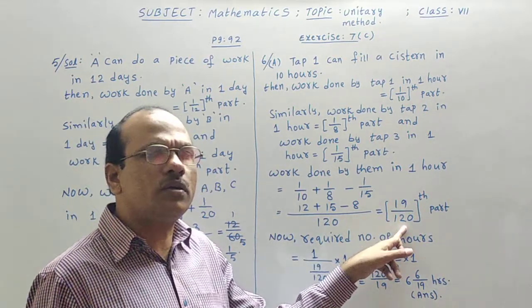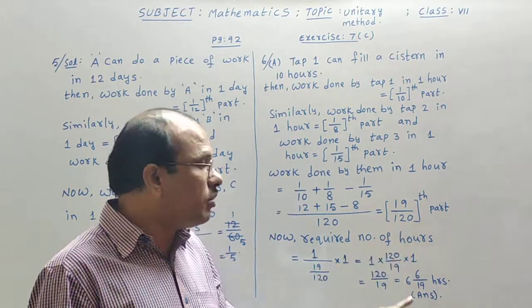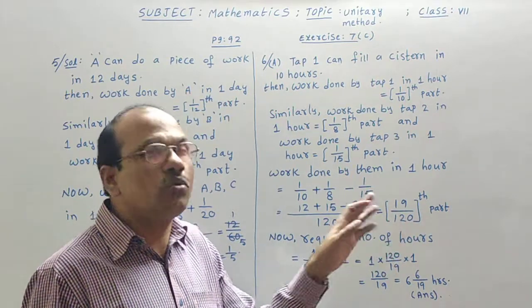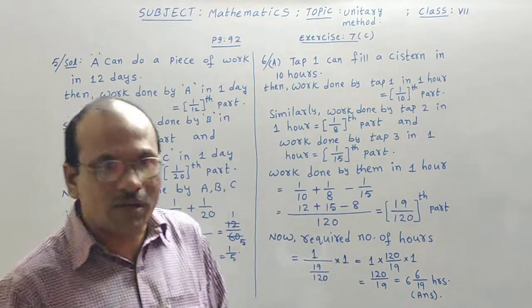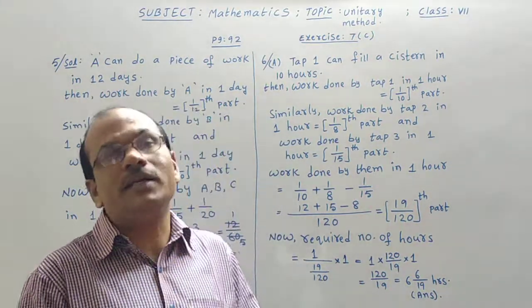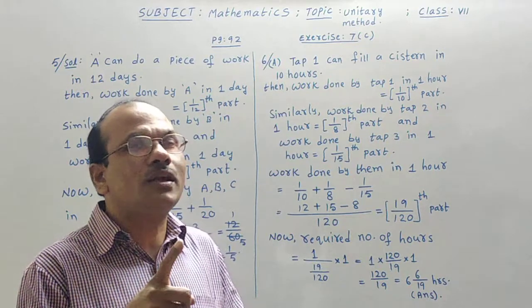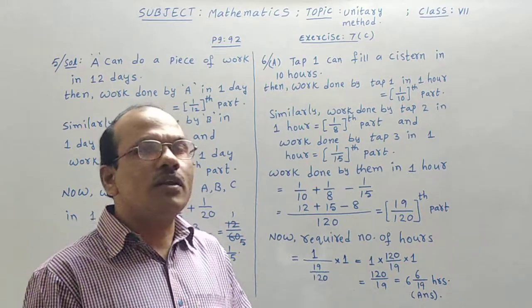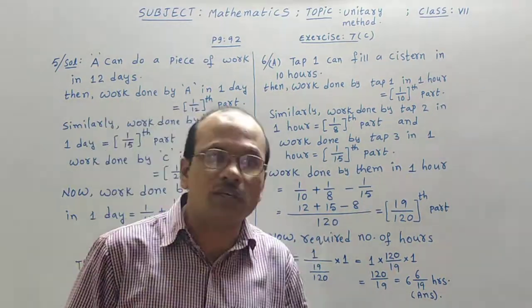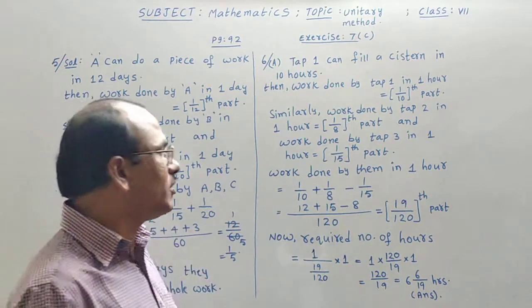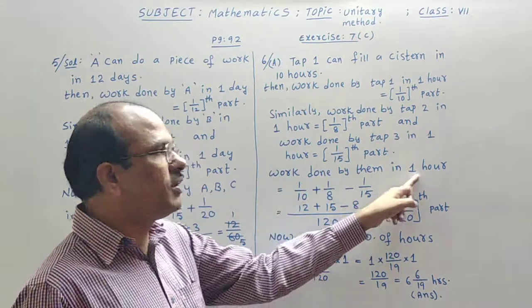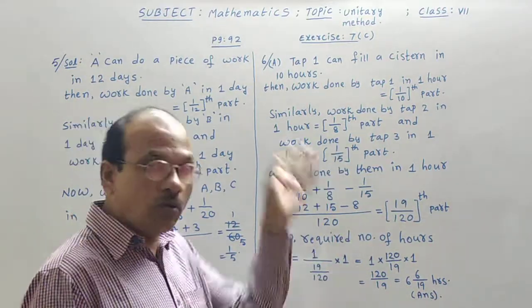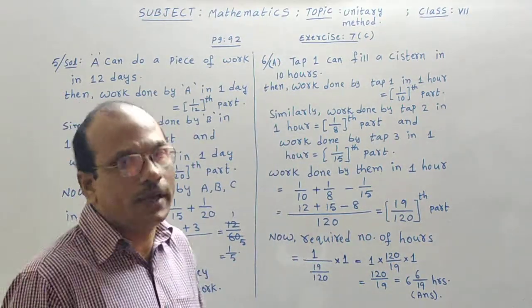So, 19 by 120th part is filling with one hour of time. Then, one whole system or whole tank should be filled so that they need more number of hours, because one is only bigger than 19 by 120. One tank or one cistern or whole cistern means that is one only, same only. So, one is bigger than this 19 by 120. That's why more time is required than the previous time. Here, only one hour is required to fill this much, but more number of hours required to fill the whole cistern or the one cistern or one tank.